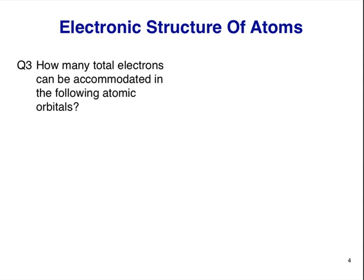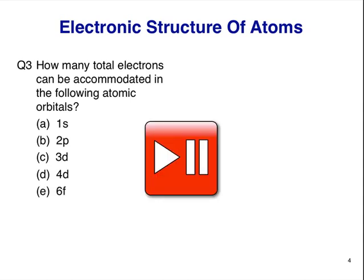Question 3. How many total electrons can be accommodated in the following atomic orbitals? 1s, 2p, 3d, 4d, 6f. Pause now, and think about the answers.